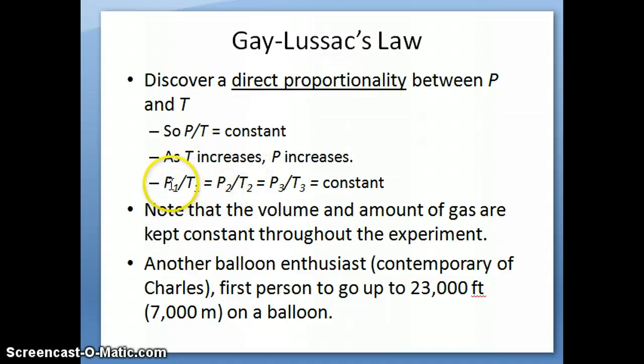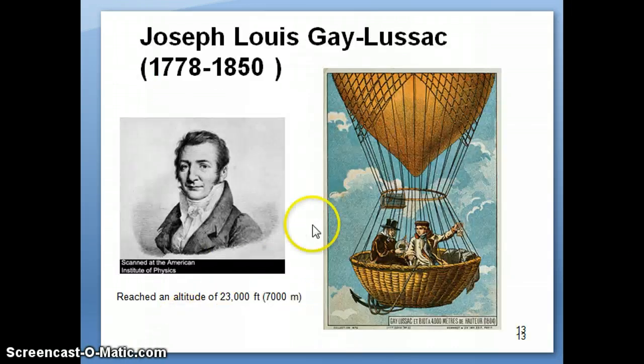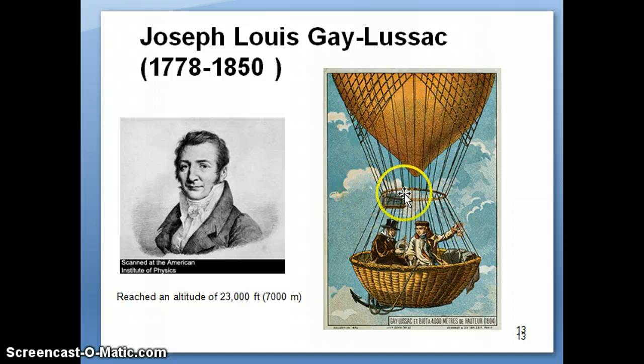Similar to Boyle's and Charles's relationship, you can express Gay-Lussac's relationship in various conditions, so P1 over T1 equals P2 over T2, and so on, assuming in this case that the volume and the amount of gas are held constant throughout the experiment. Gay-Lussac was a contemporary of Charles. They actually shared work together. He was another enthusiast of air travel, and he was the first person to go up all the way to 23,000 feet, or about 7,000 meters, on a balloon, and almost froze to death because nobody ever went up that high. Temperature got lower and lower as you go higher in the atmosphere. Here's Gay-Lussac shown on the picture.